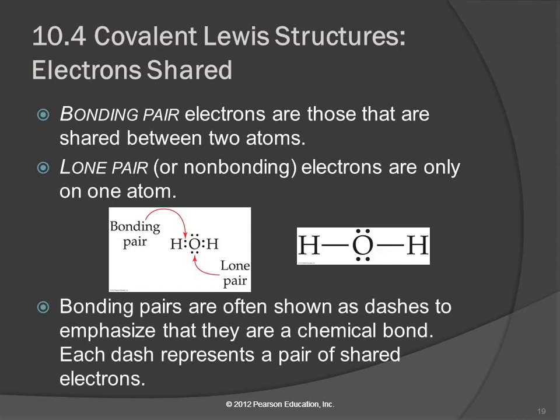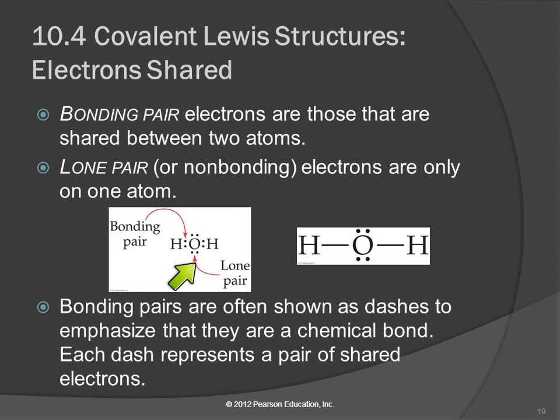The electrons that are shared are called a bonding pair — it's a pair of electrons that form the bond. The other electrons are lone pairs. The bonding pairs are shared between two atoms, while lone pairs are just on one atom. They're not involved in a bond — they're alone, lone pairs.